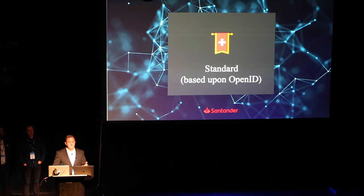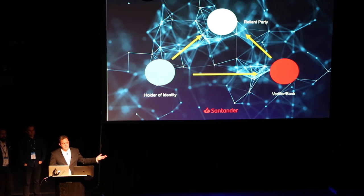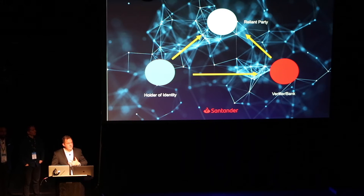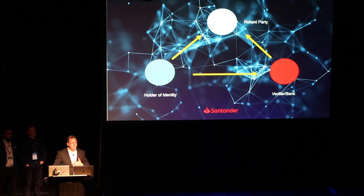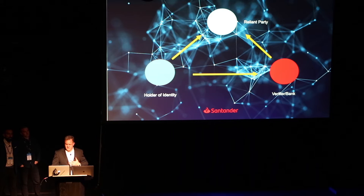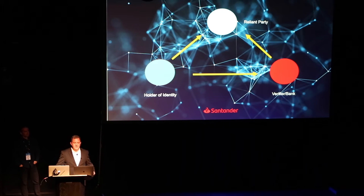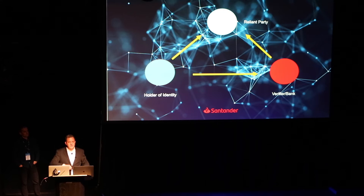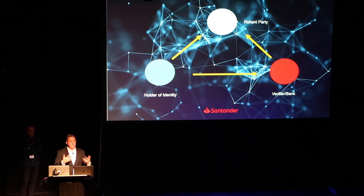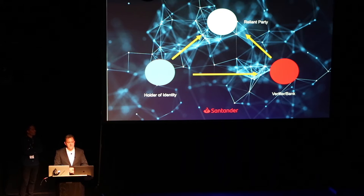We're looking for other financial organizations, vendors, and reliant parties to join us. It's a simple model: I'm a holder of identity, I go to eBay — they're a reliant party. I say I want to be a verified seller. They say either hand over a bunch of information or verify yourself with Santander. I log in, ask Santander to tell eBay that I'm good. The message is sent, and now I have a verified check beside my name. They can attach liability to that, and the bank gets an opportunity to generate profit. The community and market become more effective because we've added trust.